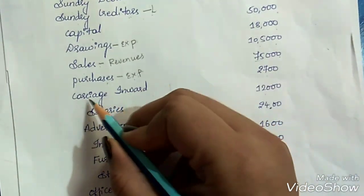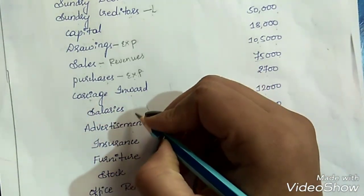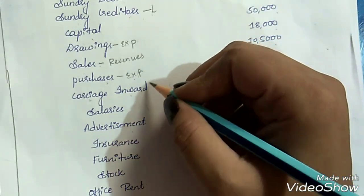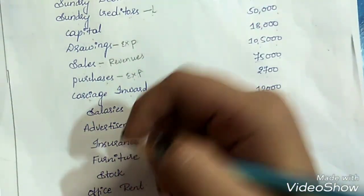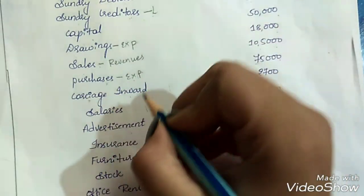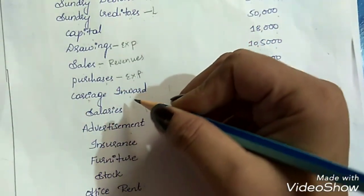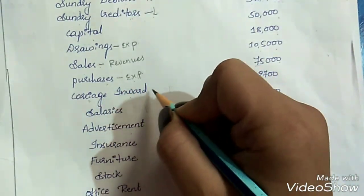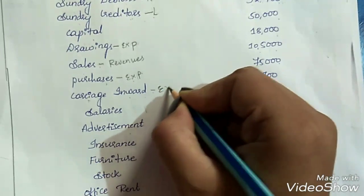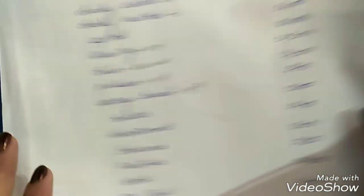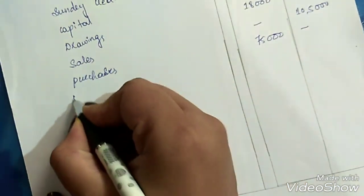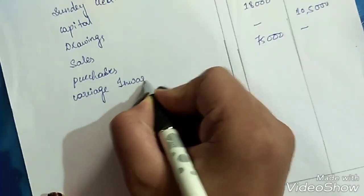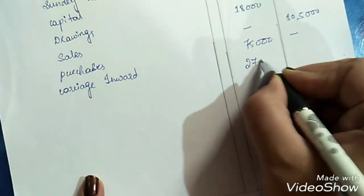Next is carriage inward, which refers to transportation cost. When we purchase certain goods from shopkeepers, we have to transport them to our place, and we pay freight or fare for the transportation — that is called carriage inward cost. So this is treated as an expense, and expenses need to be recorded on the debit side. Carriage inward, Rs. 2,700.